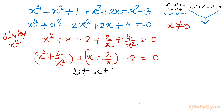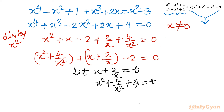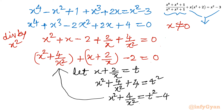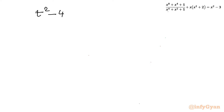The substitution is clearly visible: let t = x + 2/x. Squaring both sides gives x² + 4/x² + 4 = t², so x² + 4/x² = t² - 4. Substituting into the grouped equation: (t² - 4) + t - 2 = 0, which simplifies to t² + t - 6 = 0.